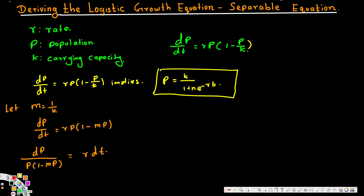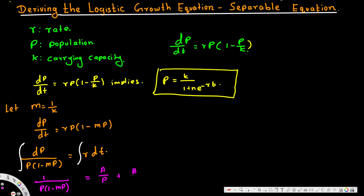After we do the separation we have to integrate both sides. For the left side with respect to p, we need to do partial fraction decomposition. Let's decompose 1 over [p(1 minus mp)] into two terms: A over p plus B over (1 minus mp).